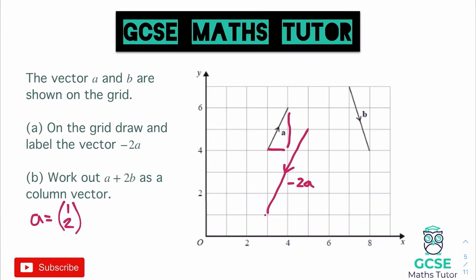For vector B — it's going downwards as shown by the arrow — it goes across 1, so positive 1, and then down by 3, so that would be negative 3. So vector B equals 1 over minus 3.